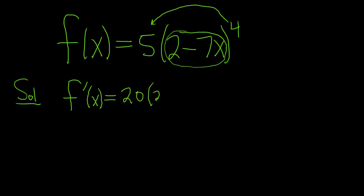And you leave the inside untouched, so 2 minus 7x. You subtract 1, so you get 3, times the derivative of the inside. The derivative of 2 is 0, and the derivative of negative 7x is negative 7.